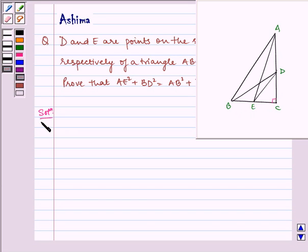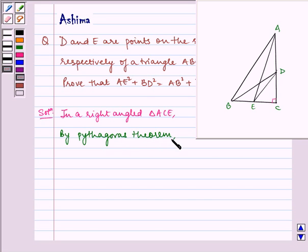Let us write the solution. In a right angled triangle ACE, by Pythagoras theorem, we can write AE square, that is our hypotenuse, is equal to AC square plus CE square. Let us name this equation as 1.